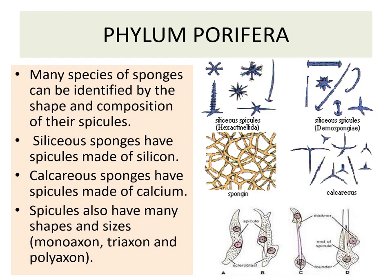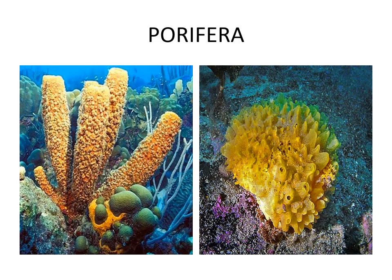Many species of sponges can be identified by the shape and composition of their spicules. Siliceous sponges have spicules made from silicon, whereas calcareous sponges have spicules made from calcium. Spicules also have many shapes and sizes. In summary, Porifera are aquatic pore-bearing organisms that are diploblastic and have a cellular grade of organization. They are holozoic in nutrition and have a canal system through which water circulates continuously, bringing food and oxygen, and taking away waste material.